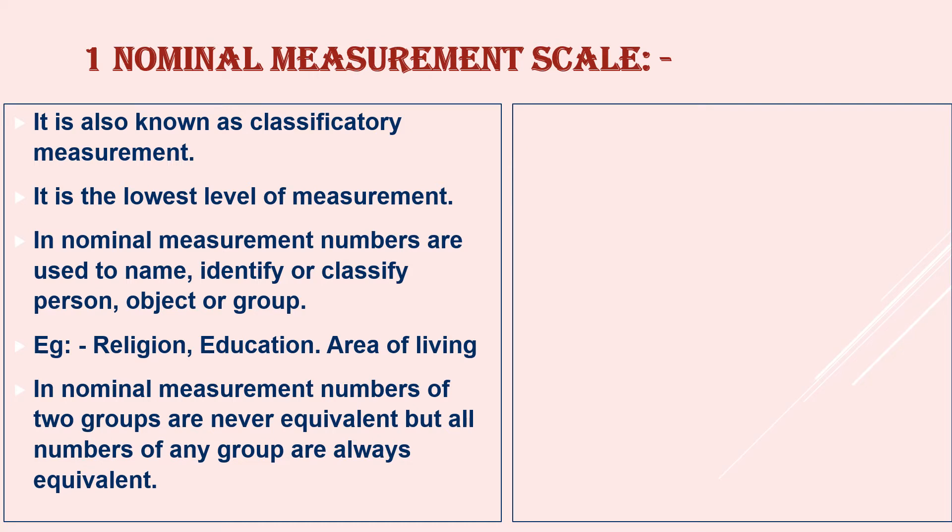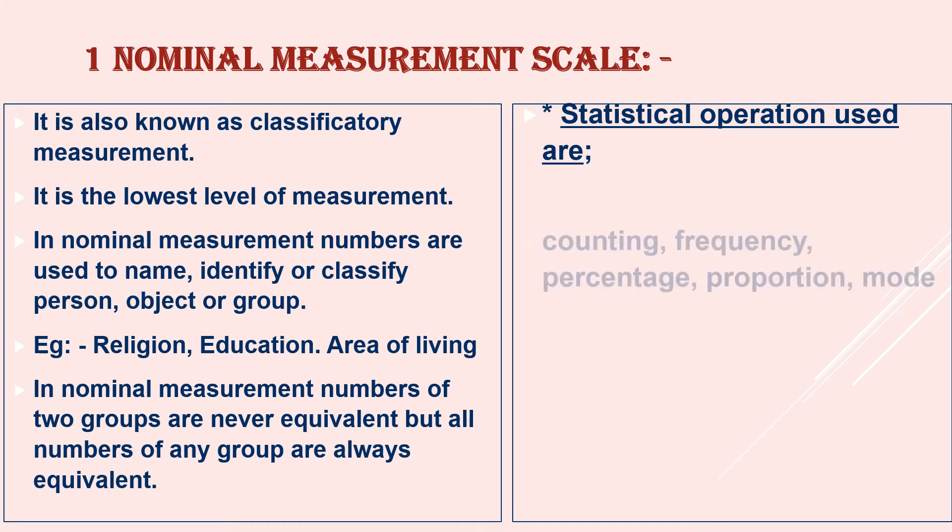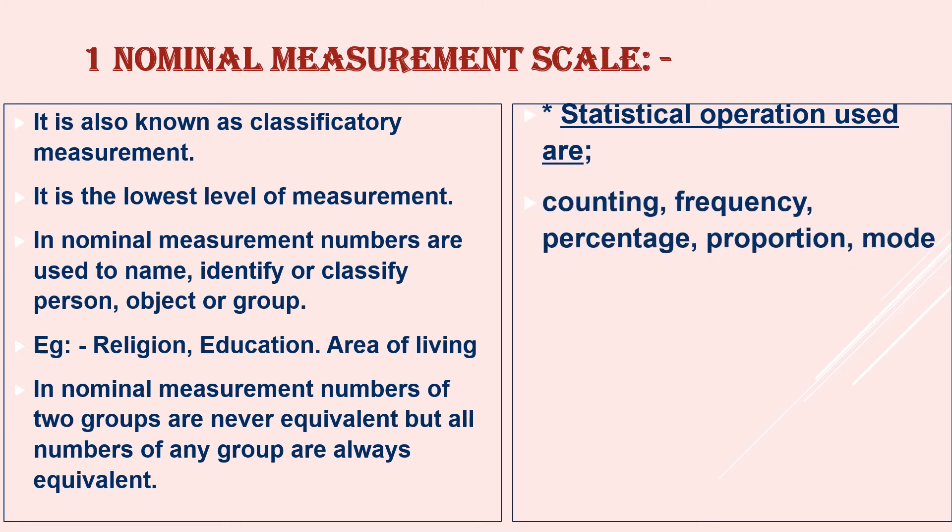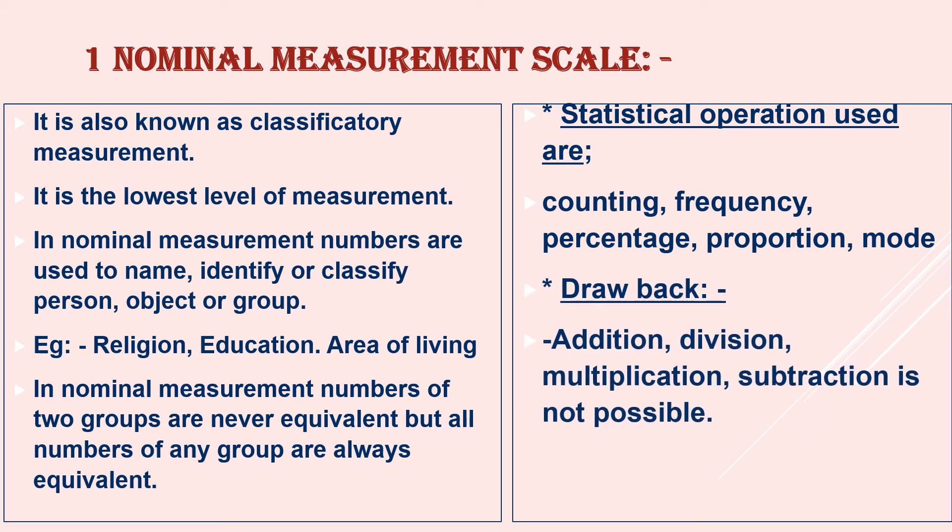Here we see what are the statistical operations possible in nominal kind of data. We can do counting, frequency, percentage, proportion and mode. And the major drawback of this data is we cannot perform addition, division, multiplication and subtraction.